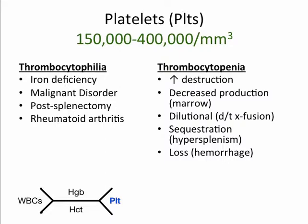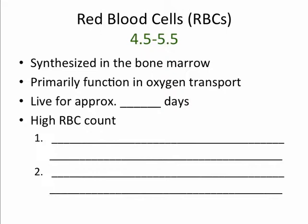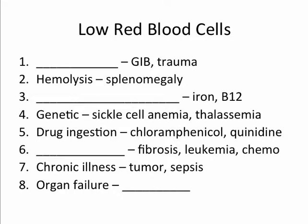Now we will look at red blood cells and associated labs. Red blood cells are synthesized in the bone marrow and primarily function in oxygen transport, living for approximately 120 days. A high red blood cell count can be found when the body requires a greater degree of oxygen-carrying capacity, such as with high altitude, and also in diseases that produce chronic hypoxia, such as with heart disease. Red blood cells can be low in hemorrhage — for example with GI bleeds and trauma — hemolysis, which can happen with splenomegaly, dietary deficiency such as iron and B12 deficiencies.